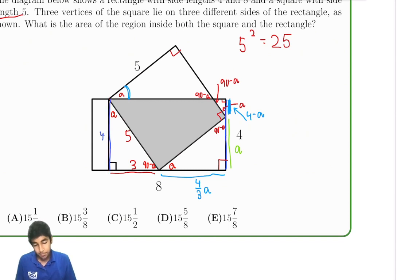So, a, the side length opposite a, will be 3 fourths the side length opposite 90 minus a. So, 3 fourths of 5. Because, again, 3 to 4 is the ratio between the sides opposite a and 90 minus a. So, this side length is 3 fourths times 5, or just 15 fourths.